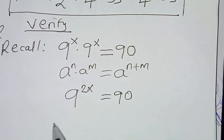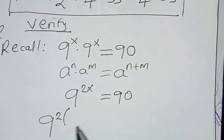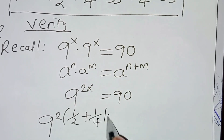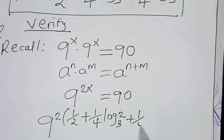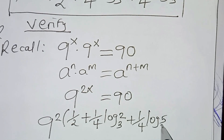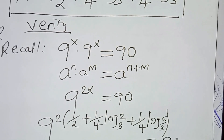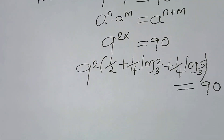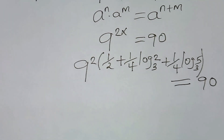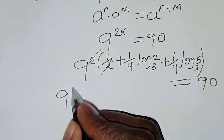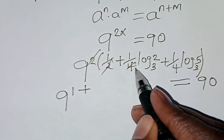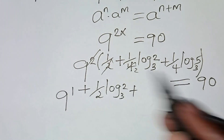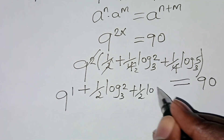Let's substitute the value of x. We have 9 to the power 2 times the bracket: one-half plus one-quarter log₃2 plus one-quarter log₃5, and this should give us 90. Simplifying the exponent, we get 9 to the power 1 plus one-half log₃2 plus one-half log₃5.